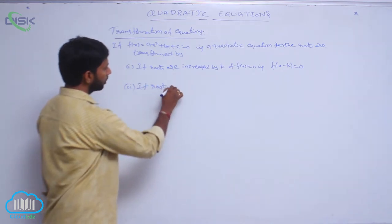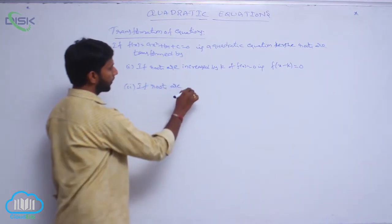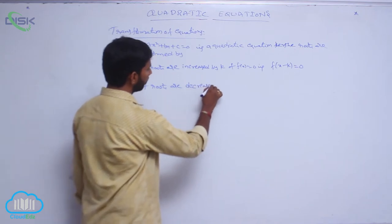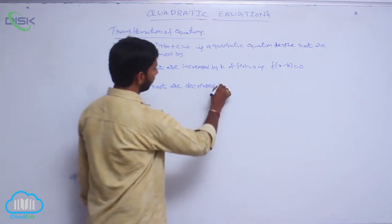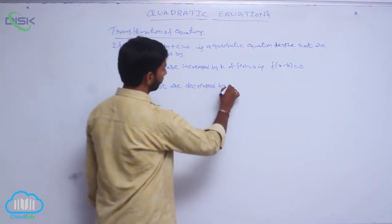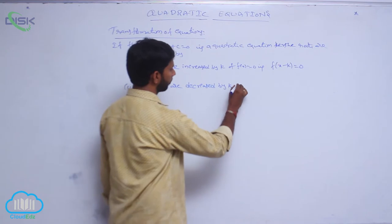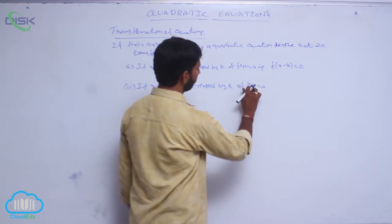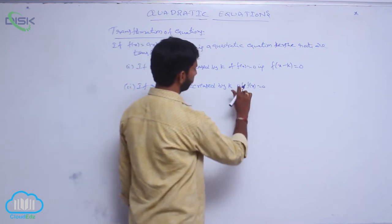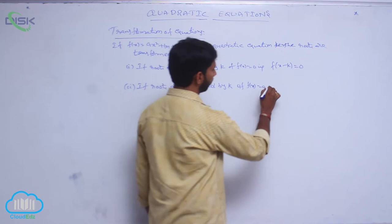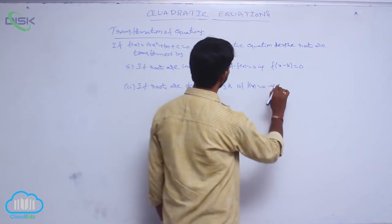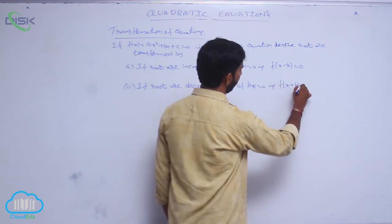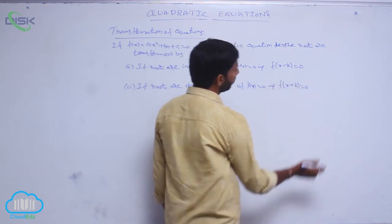If roots are decreased by k, then f of x equal to 0 becomes f of x plus k equal to 0.